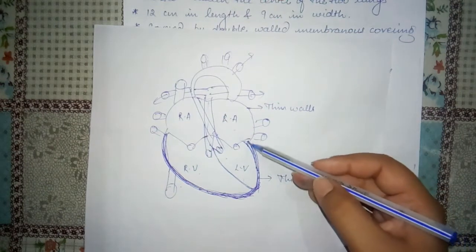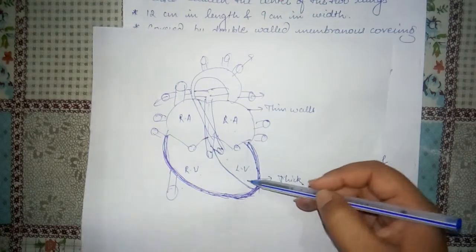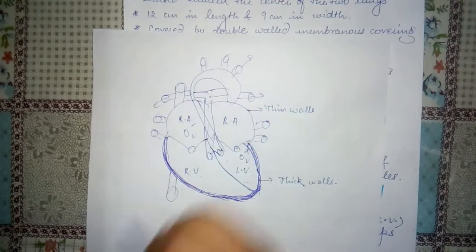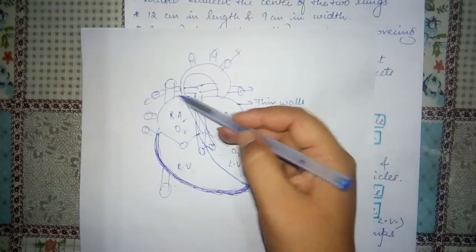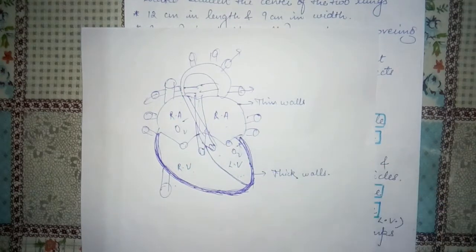Uske laabha eek reason ye bhi hai ki in me joh blood flow kertaa hai, wo kaisa hai zahadhar? Especially in left ventricle, it carries oxygen rich blood, and it carries oxygen deficient blood. This is the main reason why left oracles have the most brittle walls and left ventricle walls are the most thick.